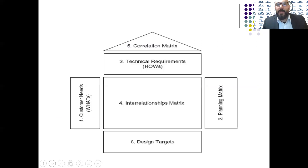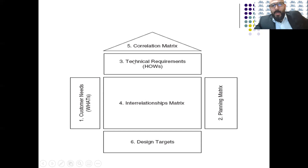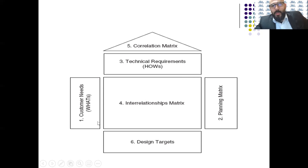Let's go ahead and talk about the QFD and how we could develop a quality function. The house of quality consists of rooms. The first important room is the customer — what the customer wants. Number three is the technical requirements: how we could achieve the customer needs. We need to study the relationship between the technical requirements and the customer needs, and how important they are to each other.